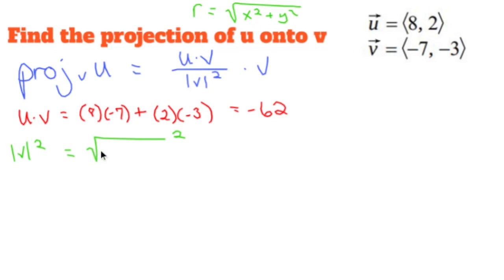We'll deal with that in a moment, but this is negative 7 squared plus negative 3 squared. So 49 plus 9 is 58. Square and square root cancel each other out. 58 it is.